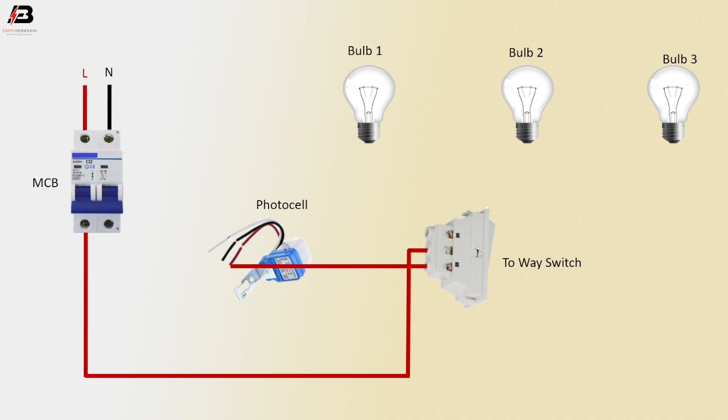Neutral connection input to MCB. Neutral connection from MCB to connect photocell sensor. Neutral connection from sensor to connect bulb 3, bulb 2, and bulb 1.